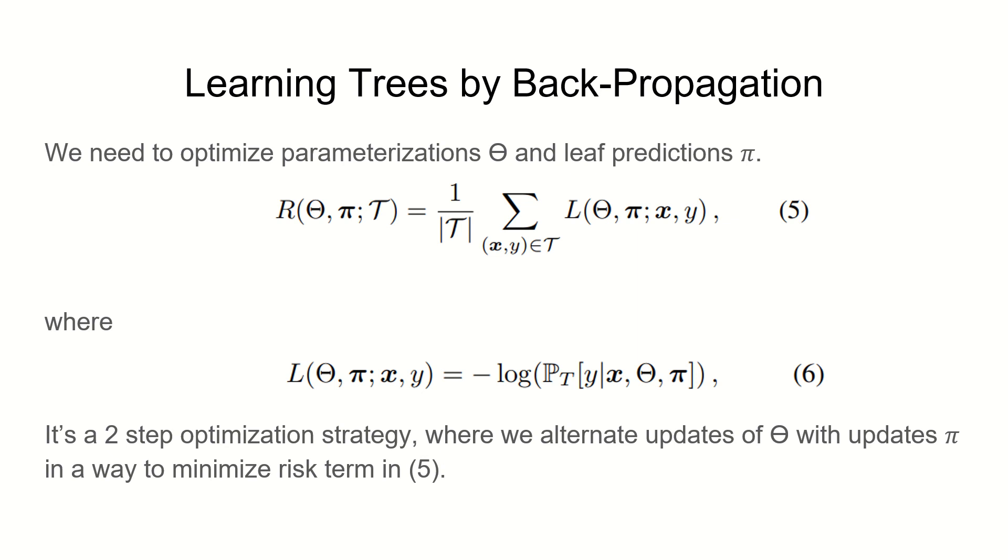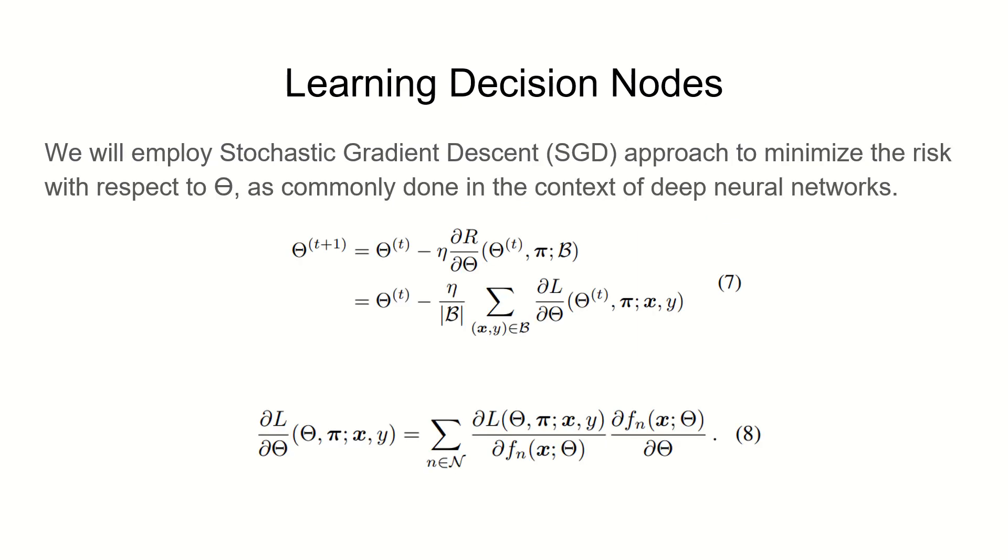Learning decision nodes, in other words minimizing theta, we will employ a stochastic gradient descent approach to minimize the risk with respect to theta, which is represented in this equation. This beta here is a mini batch which is taken from dataset T. We can decompose the derivative log loss like this in equation 8 to smooth out the calculation.